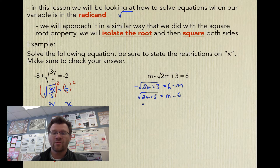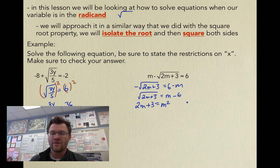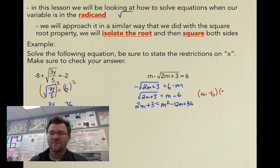So we get the square root of (2m + 3) equals m minus 6. Now when we square both sides, we have a binomial on the right-hand side, and we need to square it properly by multiplying it by itself. Don't just square each term — square the first, square the last, multiply the two terms together and double it, giving negative 12m plus 36. That's the same as (m − 6)(m − 6) using FOIL.